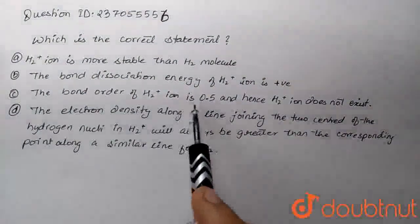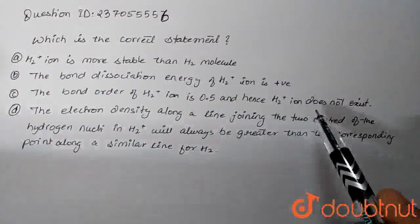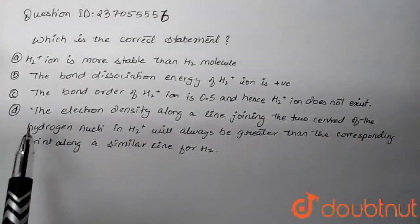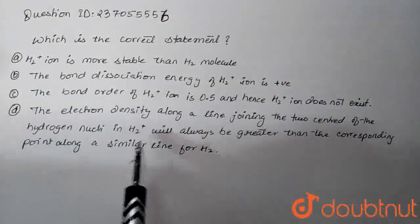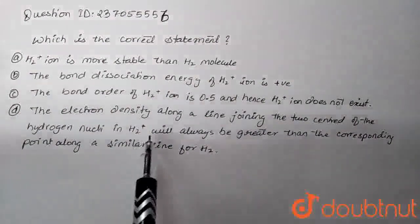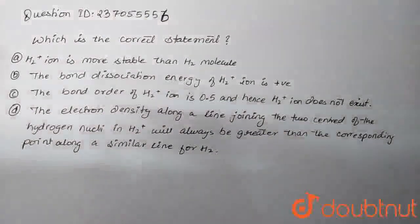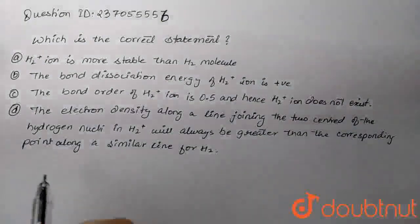The bond order of H2 plus is 0.5 and hence H2 plus does not exist. And the third is the electron density. Electron density will be more in H2 plus as compared to H2. This is our fourth option. So, let's study all the statements here.